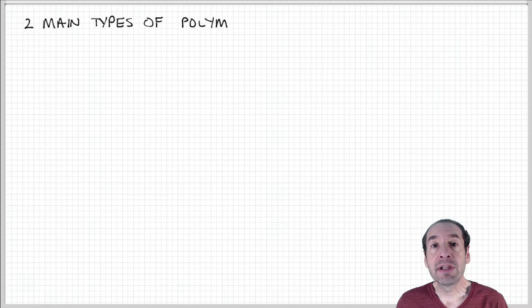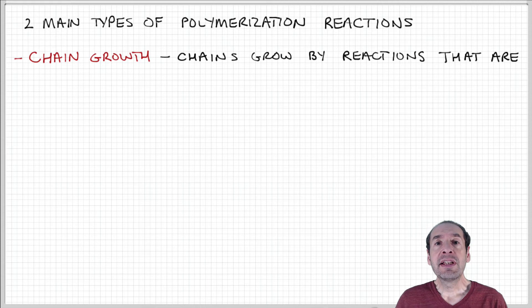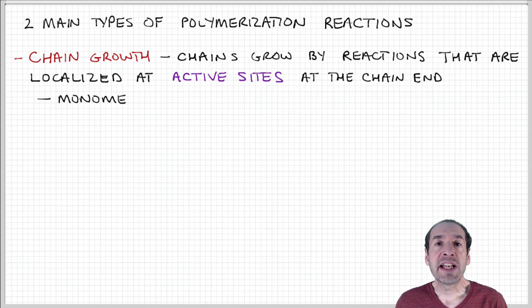The second major type of polymerization reaction is called chain growth polymerization. This is different from step growth polymerization because the polymerization process takes place by a reaction that's localized at an active site, which is at the end of the growing polymer chain.